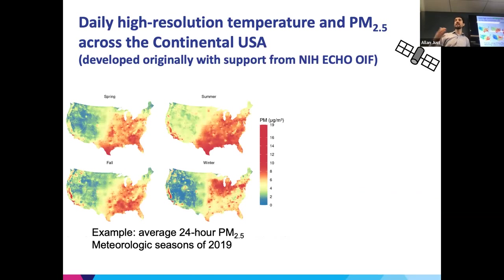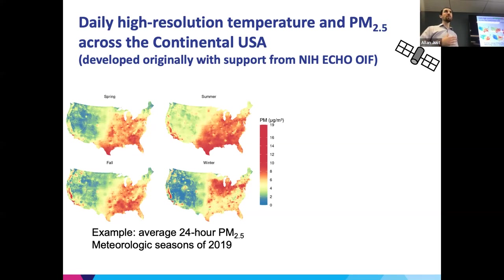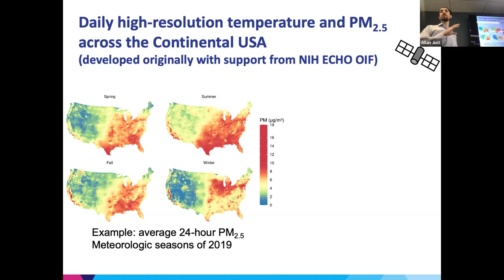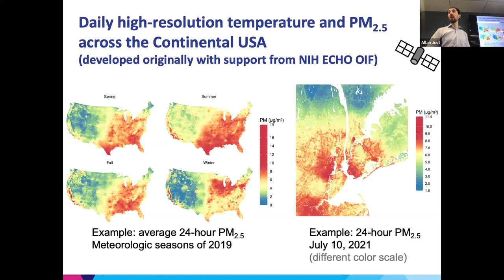With support from NIH's ECHO program — they had an opportunity and infrastructure fund — we started building out national models. We built a national model for PM2.5, and then I'll show one for temperature. On the left is the daily PM2.5 averaged across meteorologic seasons in 2019 for this national model.